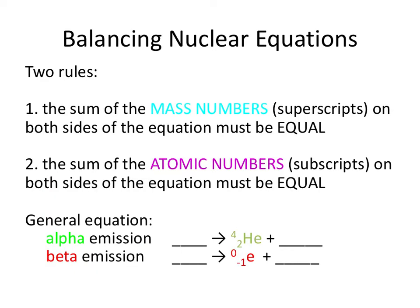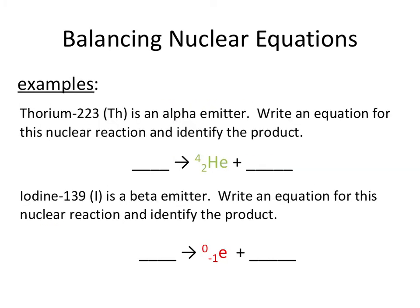So balancing nuclear equations — we're going to be balancing for alpha and beta emission processes. The two rules you're going to be following are: first, the sum of the mass numbers (the superscripts up top) on both sides of the arrow have to be equal. And the same thing has to be true for the atomic numbers. So generically speaking, if you're told you have an alpha emission happening, one of the products is an alpha particle. Same thing for beta emissions — a beta particle is represented as a product. You're also going to obtain new nuclei, and of course you have your starting material. Let's go ahead and do some examples — you're going to need your periodic tables here.